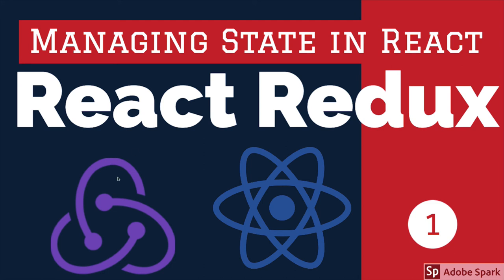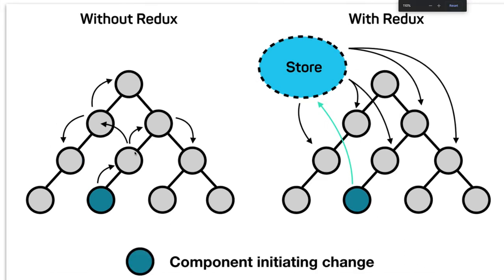So what problem is Redux trying to solve? It's the same problem we face with simple React components. When we have React components they are interdependent on one another for state and for calling functions. They emit an event to the parent and the parent emits an event to the grandparent — that's called the props drilling problem. We were trying to solve this with Context APIs, but what if we have hundreds of components and need a centralized state? In that case we can use Redux and put these things inside a store.